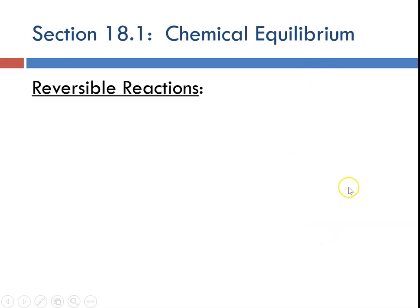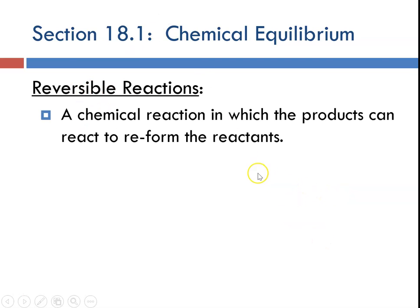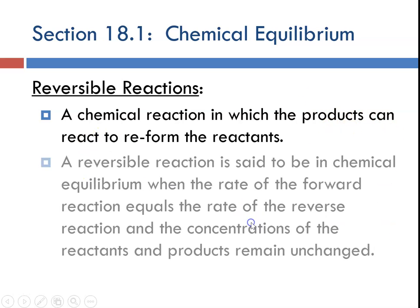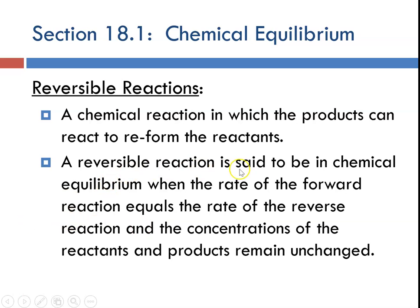What is chemical equilibrium? We've talked in the past about reversible reactions — that's any chemical reaction in which the products may react to reform reactants. A reversible reaction is said to be in chemical equilibrium when the rate of the forward reaction equals the rate of the reverse reaction, and the concentration of reactants and products remain unchanged.